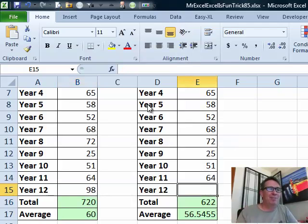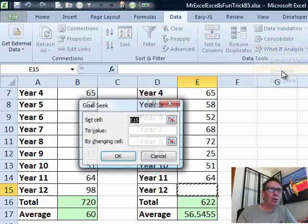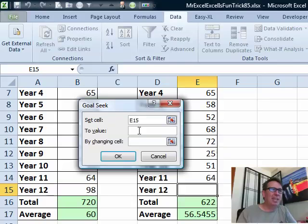But there is a faster way than that. Let's just go here to Data, What If Analysis, Goal Seek. Goal Seek, set cell E15 to, actually no, we want to set cell E17, let me do that again, E17 to 60 by changing cell E15. There we go. We don't have to plug in numbers, right? Just click OK.